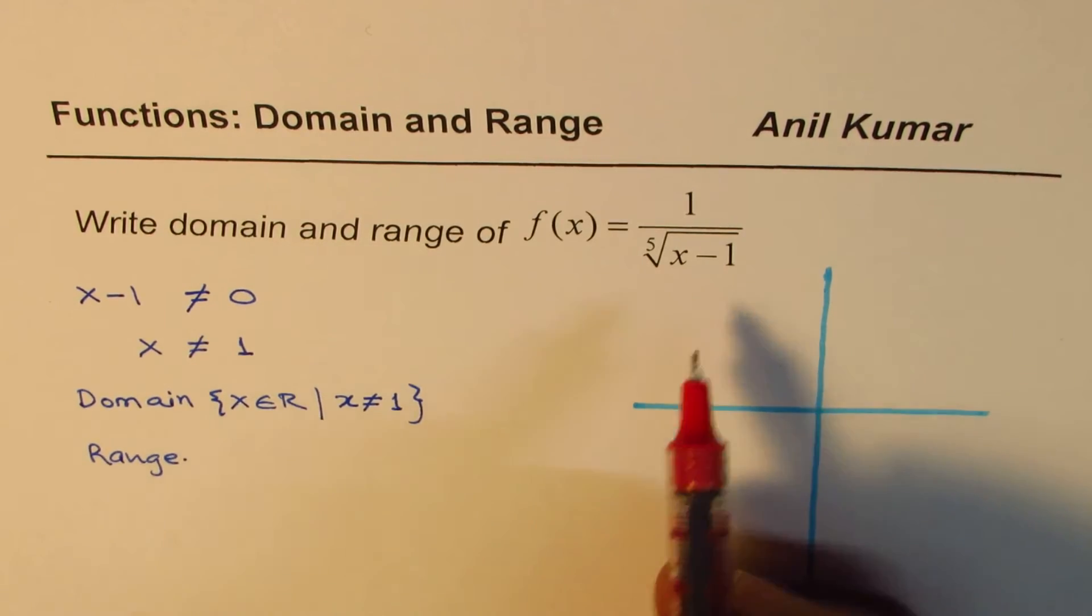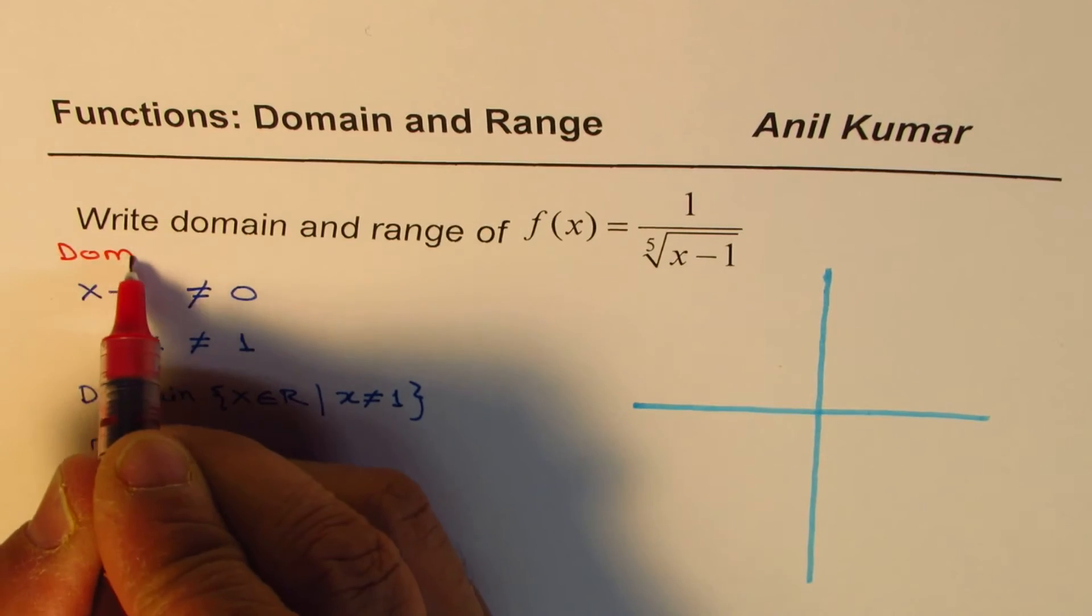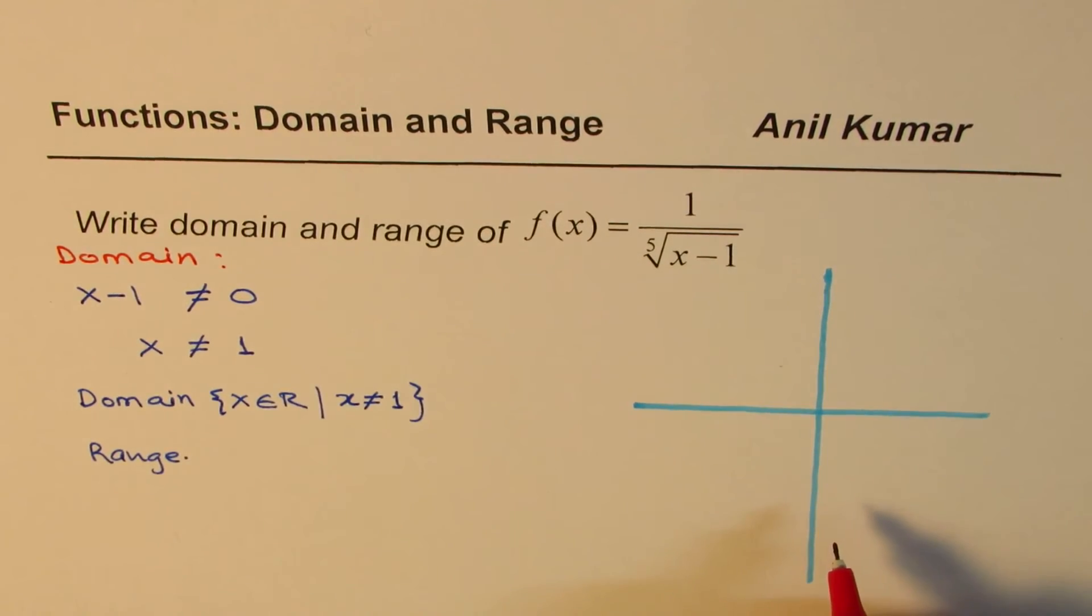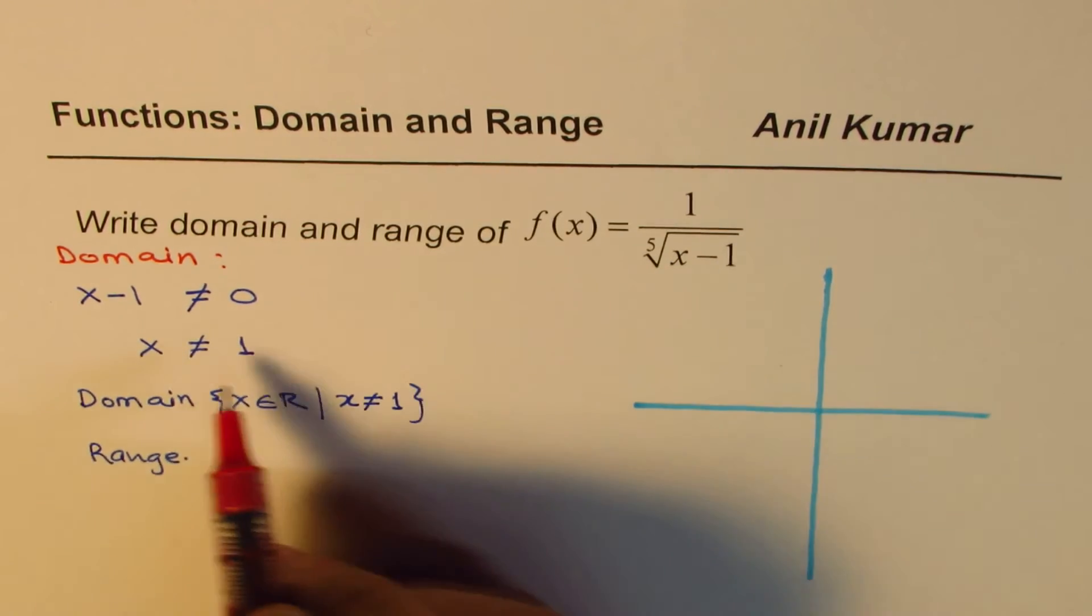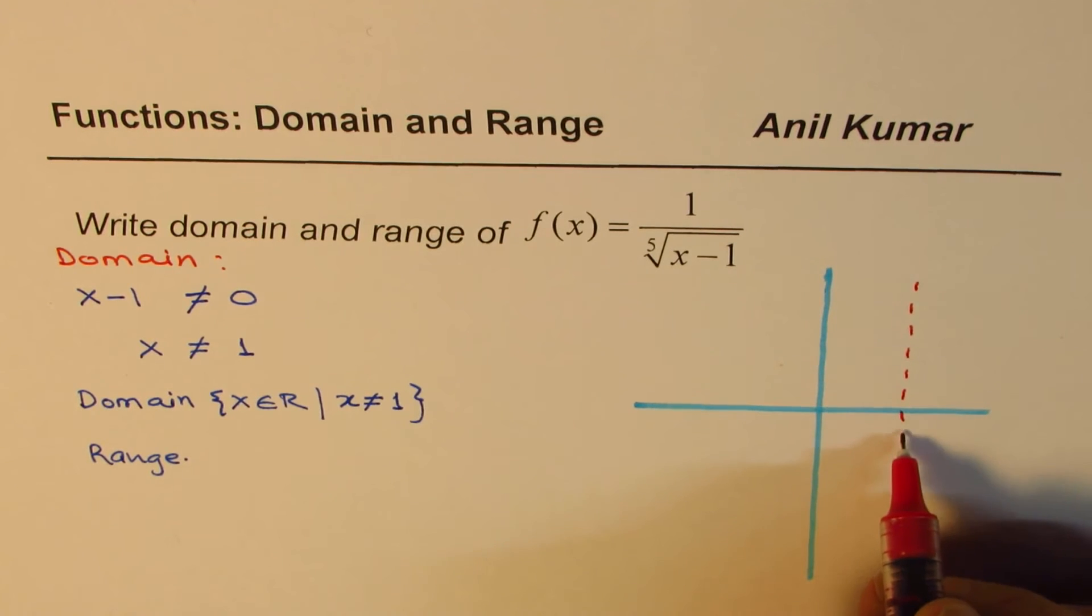So let me give you a rough sketch here based on what we have learned. We first found the domain and that was by restricting the denominator. And we got x is not equal to 1. In fact, at 1, we will have a vertical asymptote.